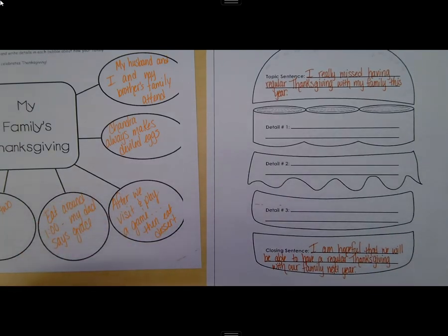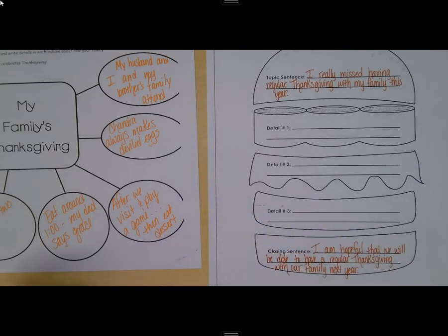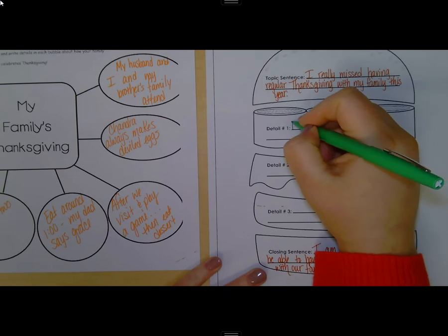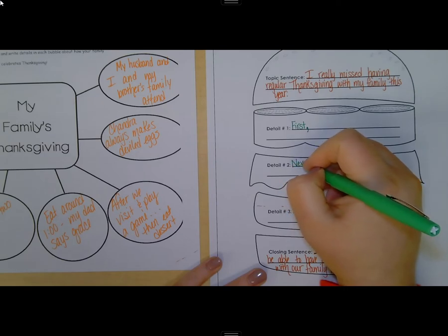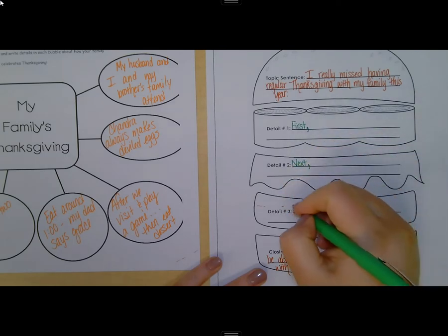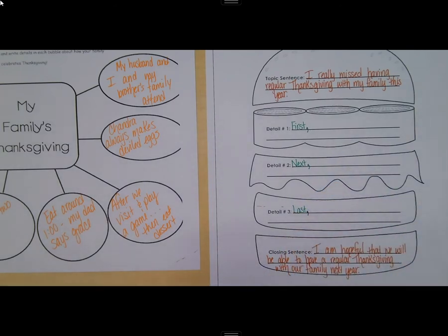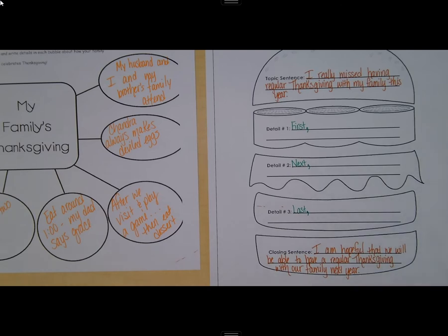I need to write three details. Hopefully, you remember from our last paragraph writing that each detail should begin with a transition word. I'm going to write in 'first,' and then you should have a comma, 'next,' and a comma, and 'last,' and a comma. Those are not the only transition words — you have a list I have given you before, also included in your file today. You can choose different transition words, but each detail sentence must have a transition word.